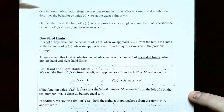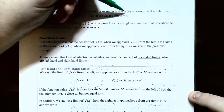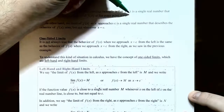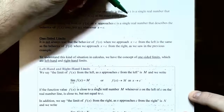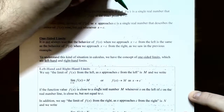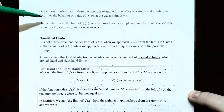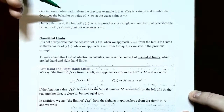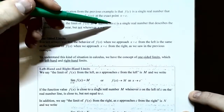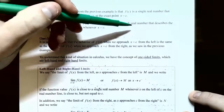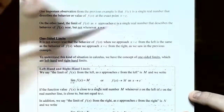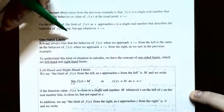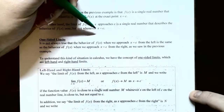One important observation: the y value f of c doesn't have to exist — you can have a hole in the graph. From the definition of a function, one x value gives exactly one y value. However, the limit of f of x as x approaches c must be a single real number. If the y values are getting close to one particular number, that's called the limit. It doesn't matter what's happening at x equals c — it's what's happening when you get close to x equals c.